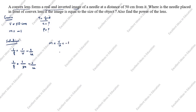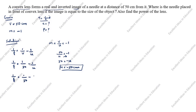Applying the magnification formula: minus 1 equals v by u, where v is 50, so minus 1 equals 50 divided by u. Therefore u equals minus 50 centimeters. Now we have the u value. Substituting into the lens formula: 1 by f equals 1 by 50 minus 1 by minus 50.